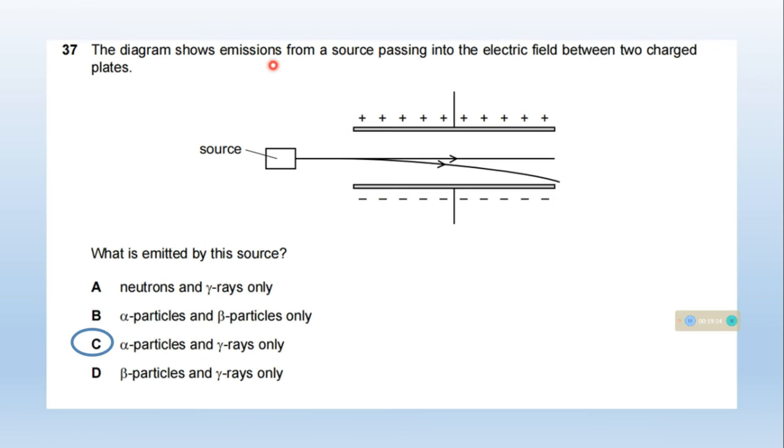The diagram shows emissions from a source passing into the electric field between two charged plates. What is emitted? The particle when passing through the electric field attracts toward the negative plate, and one line is undeflected. Gamma rays are neutral particles, and alpha particles are positively charged, so they're attracted toward the negative plate. Option C, alpha particles and gamma rays only, is correct.